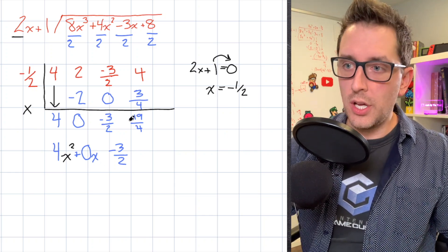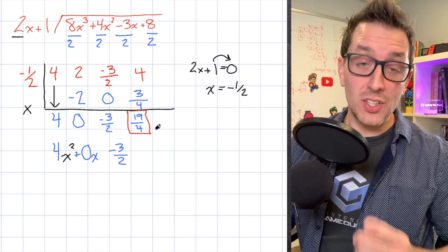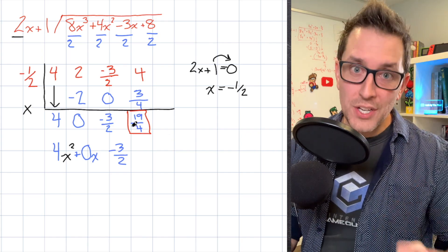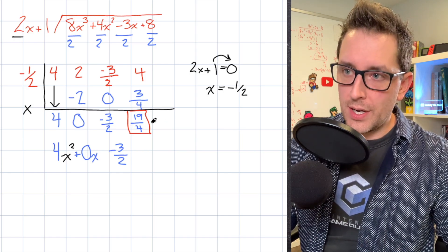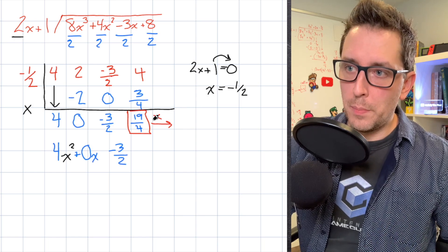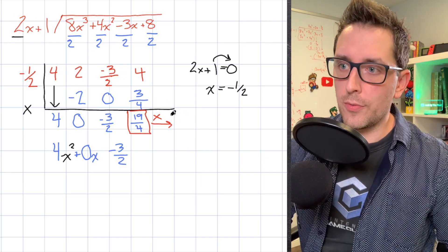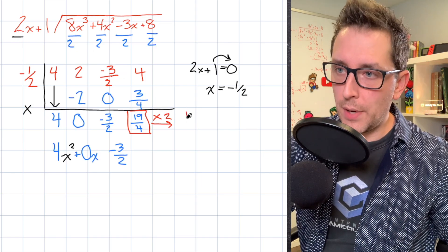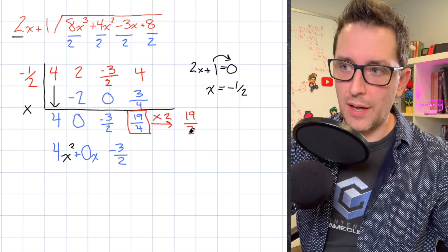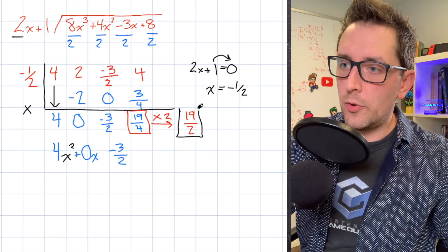Normally we look at the last value to find our remainder, but here there's one extra step. We take that value of 19 over 4 and multiply it by the leading coefficient of our divisor, which is 2. So 19 over 4 multiplied by 2 gives us 19 over 2. That value — 19 over 2 — is our actual remainder.